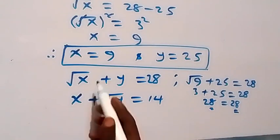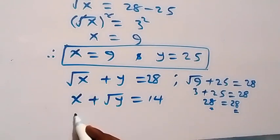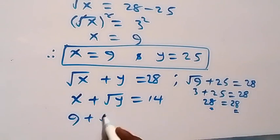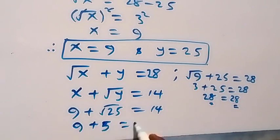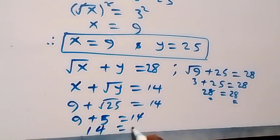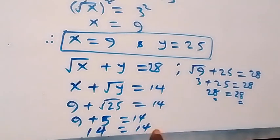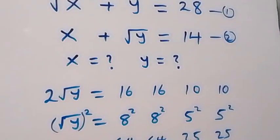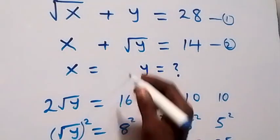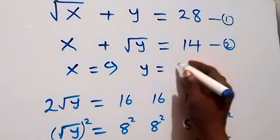Now also the second equation: x + √y = 14. Substituting x = 9 and y = 25: 9 + √25 = 9 + 5 = 14, which equals 14. Left-hand side equals the right-hand side. So we can conclude that x = 9 and y = 25.